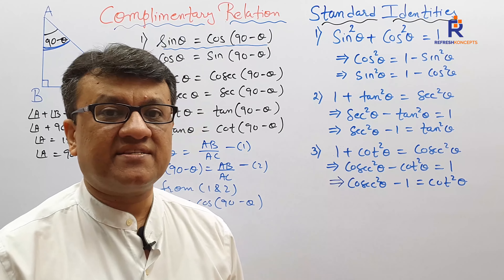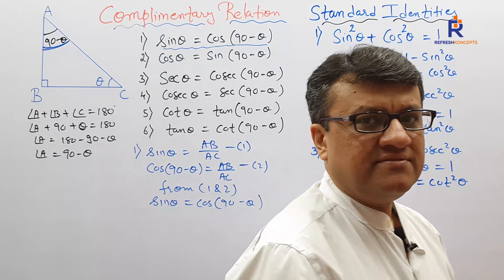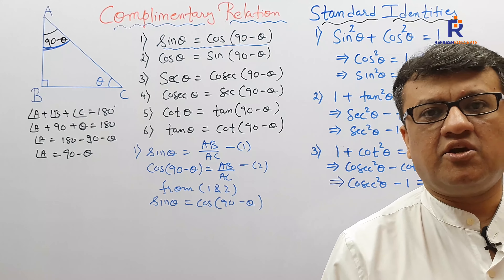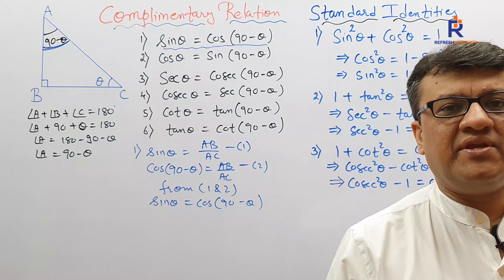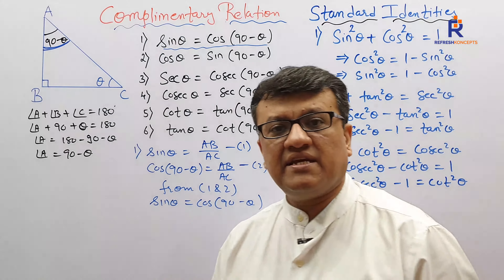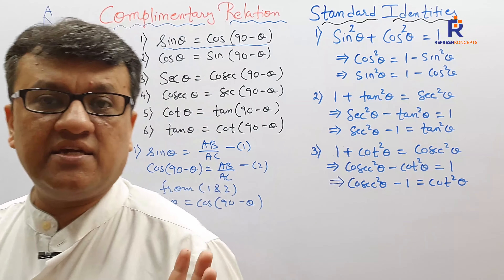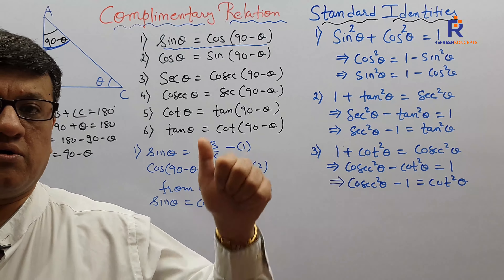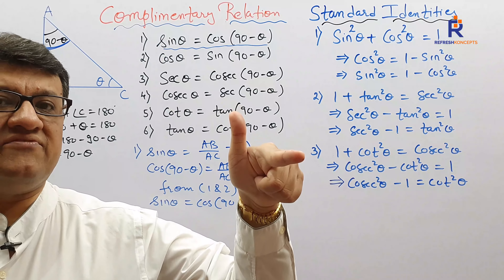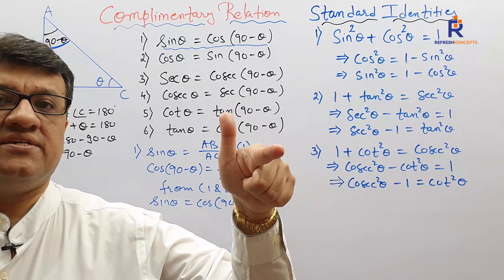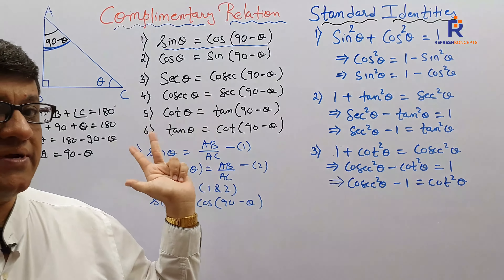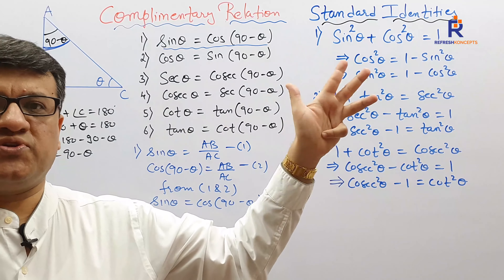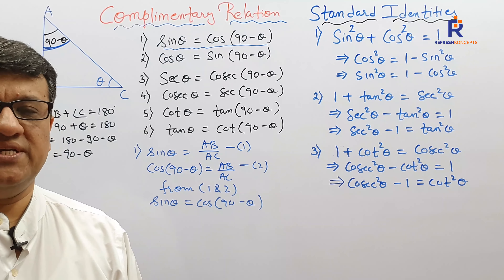So what have we learned? Complementary relations — sine and cosine, sec and cosec, tan and cot — and the three standard identities. As I said previously, children, you should know all the basic definitions, reciprocal relations, complementary relations, and identities. If you know all of these, you can say you know trigonometry very well.